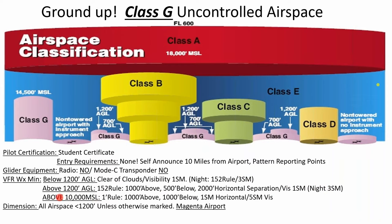Above 10,000 feet I call it the one prime rule: 1,000 feet above, 1,000 feet below, one statute mile horizontal, and five statute miles visibility. The rules change because of different traffic — above 10,000 feet you have jetliners, private jets, and prop planes flying on IFR flight plans at much higher speeds. If they come busting out of a cloud, you need a chance to see each other and correct — it's all about safety for different traffic.